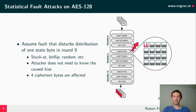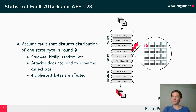Statistical fault attacks assume that an attacker is able to perform a repeated fault injection in the encryption of plaintexts such that the distribution of certain bytes within round 9 of the AES state is not uniform anymore — there is some kind of bias. In our concrete example, we inject faults that cause a biased distribution of the first state byte in round 9. Notably, the attacker does not need to know what he is doing — he could use stuck-at faults, bit flips, or random faults — and does not need to know the bias he is causing. As long as there is some kind of bias, he is good.